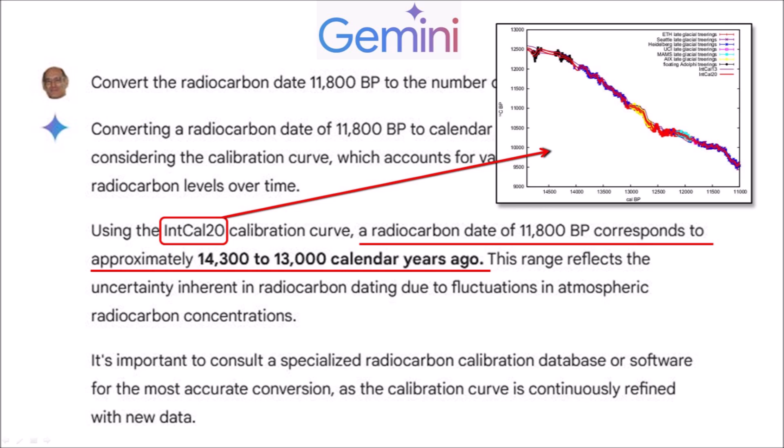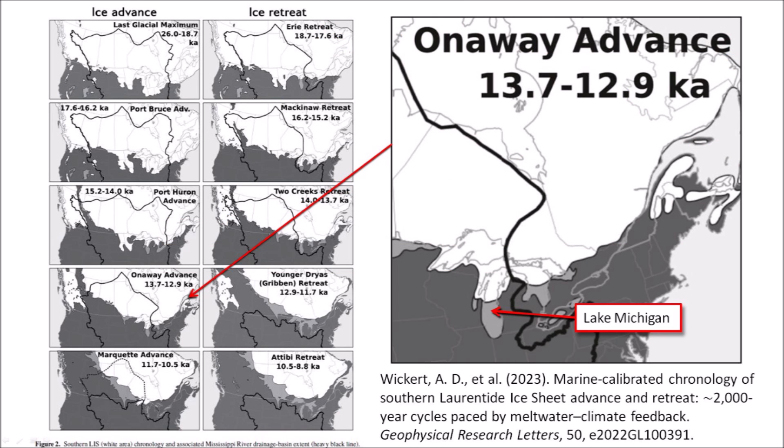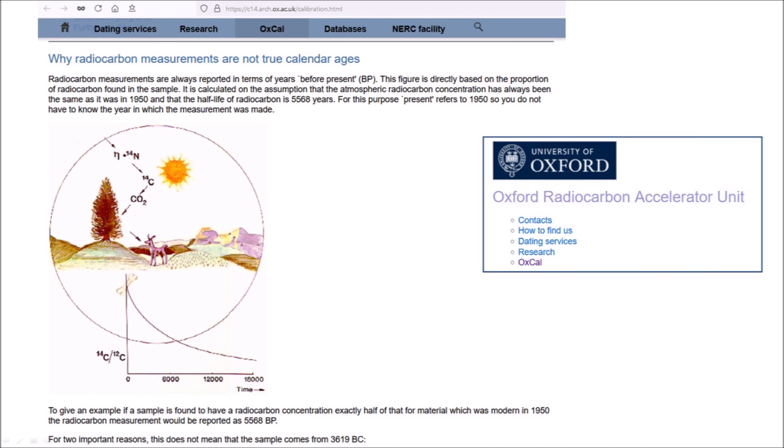There are several programs that reference the calibration curves to convert radiocarbon dates to calendar dates. The date range provided by Gemini was similar to the one published by Wickert in 2023, but the dates from Wickert are probably based on more current values. Wickert's image shows that approximately 12,900 years ago, half of Lake Michigan was covered with ice, the lower Michigan Peninsula was ice-free, and half of Lake Huron still was covered with ice. Correlating radiocarbon dates with calendar dates is complicated.